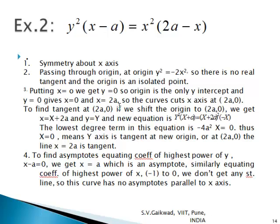For intercepts: x = 0 gives y = 0 (origin is the only y-intercept). Putting y = 0 gives the additional point x = 2a. Shifting the origin to (2a, 0) and equating the lowest degree term to zero gives x = 2a as the tangent at that point. For asymptotes: the highest power of y is y² with coefficient (x − a). Setting x − a = 0 gives x = a as an asymptote parallel to the y-axis. There is no asymptote parallel to the x-axis.